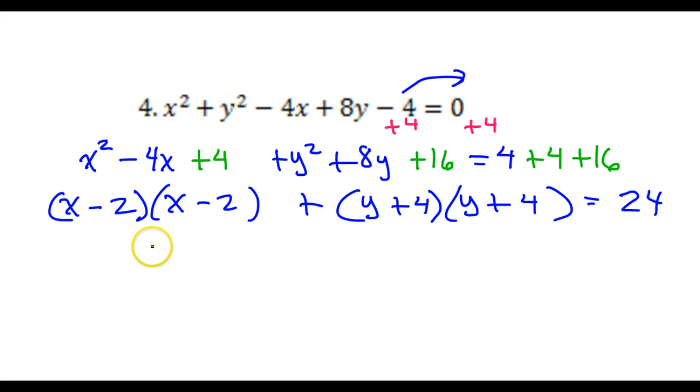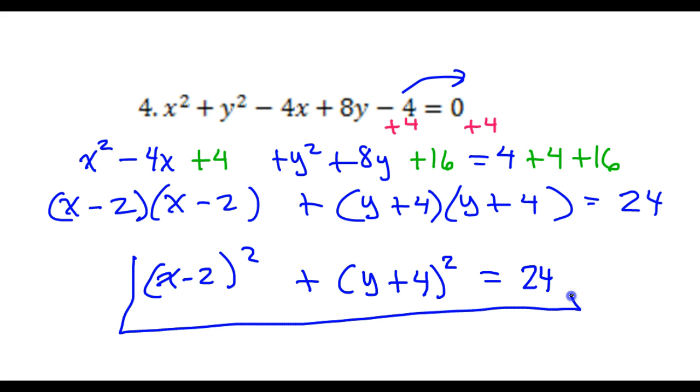All right. To finish putting this in standard form, I will pull these together as x minus 2 squared plus y plus 4 squared is equal to 24. So that is how you go from general form to standard form.